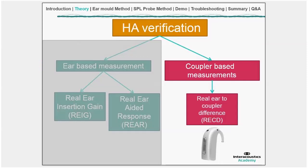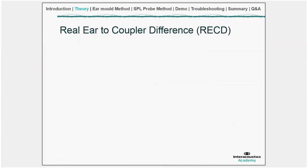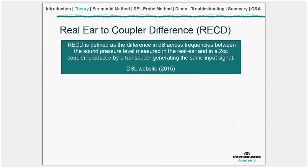We'll be focusing on the behind-the-ear hearing aid because these are the most commonly fitted devices when using RECD measurements. So what exactly is an RECD? The DSL group defines it as a difference in dB across frequencies between the sound pressure level measured in the real ear and in the 2cc coupler, produced by a transducer generating the same input signal. That's quite difficult to digest, so let's break it down.